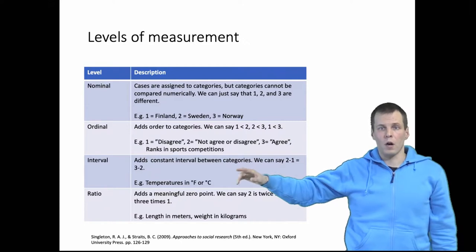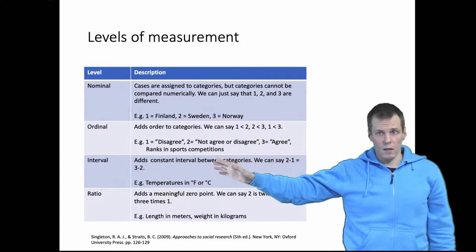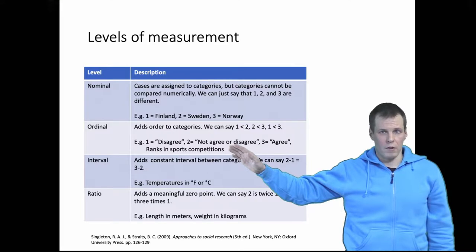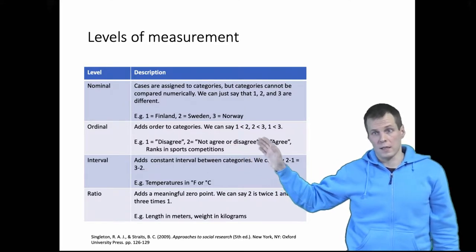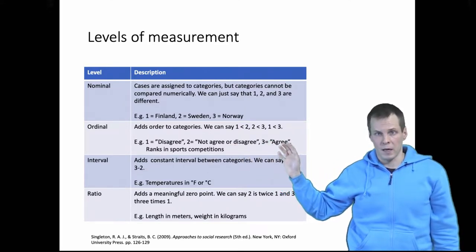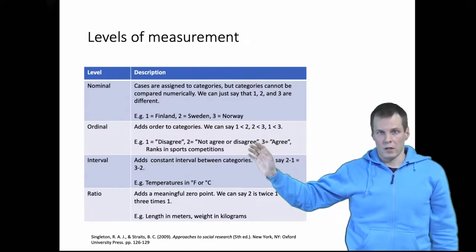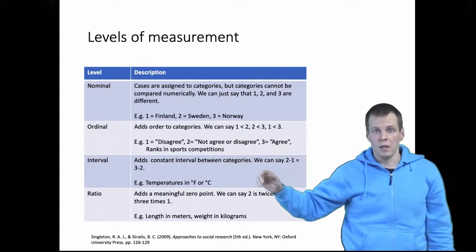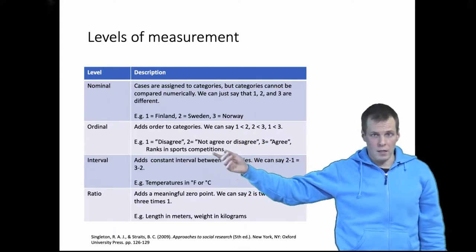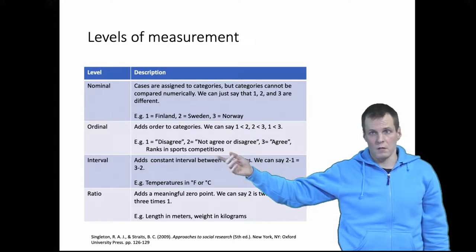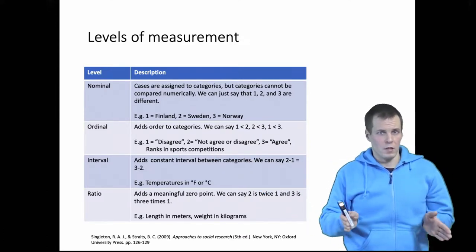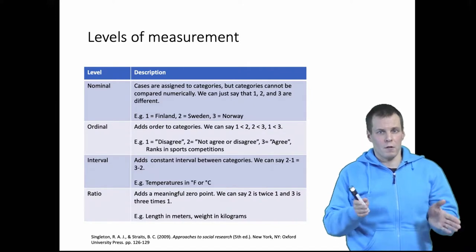For example, we could have a rating scale where one is disagree, two is neither agree nor disagree, and three is agree. We can't say that the difference between agree and neither agree nor disagree is the same as the difference between disagree and neither agree nor disagree. Also, we can have ranks in sports competitions where we can't say that the difference between first and second is the same as the difference between second and third.